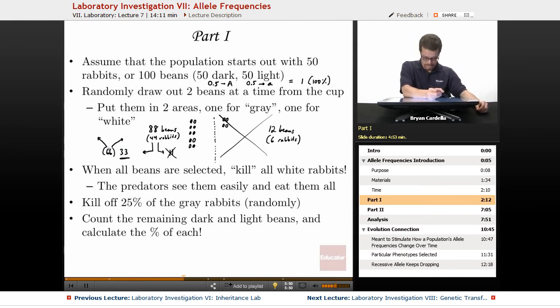So of those 66, let's say that 43 are dominant. They're dark beans. And then 23 are white beans. And if you calculate the percentage, 43 divided by 66, that equals 65 percent. And 23 divided by 66 is about 35 percent.